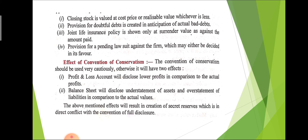Some examples of the convention of conservatism: closing stock is valued at cost price or realizable value, whichever is less — we take the lower value, not the higher, which is a form of focusing on loss. Second, provision for doubtful debts is created in anticipation of actual bad debts. Third, joint life policy is shown only at the surrender value. Fourth, provision for pending lawsuits against the firm is made, which may or may not be decided in its favor.